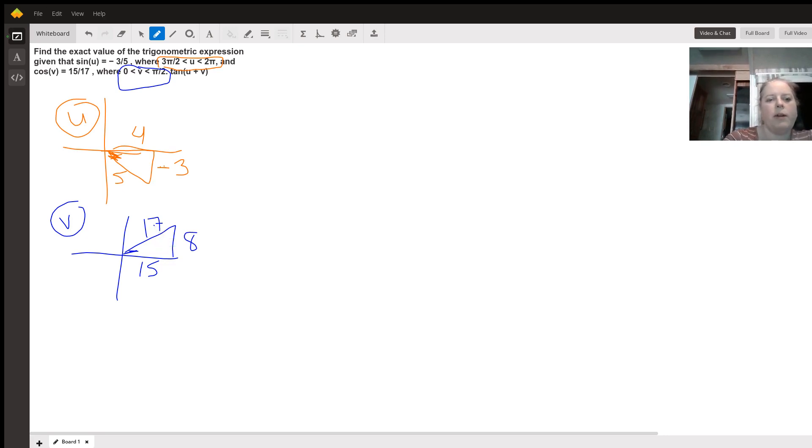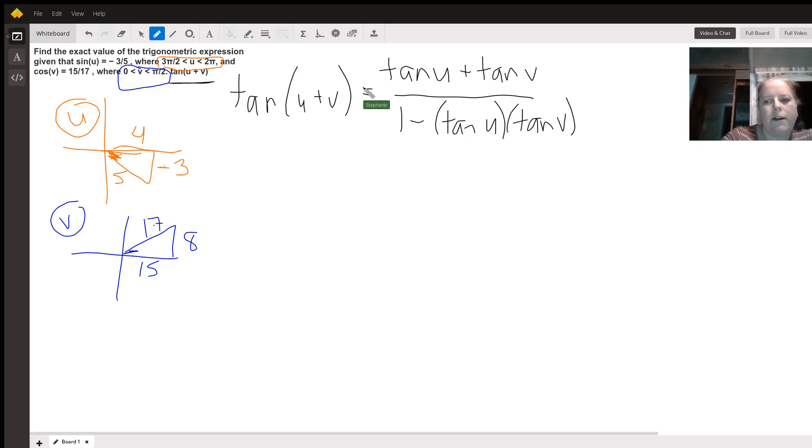So once we have that, then we can find the tangent of u plus v. And to do that, we have to use a trig identity. It should be in your textbook. Tangent of u plus v is equal to the tangent of u plus the tangent of v over 1 minus the tangent of u times the tangent of v.